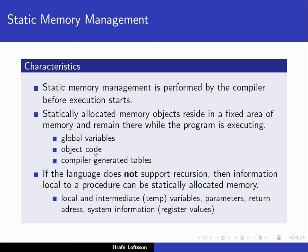Another example of a statically allocated memory object is the object code of the program itself — when loaded into memory, it sits in a specific fixed area and stays there until execution ends, with no dynamic allocation. Another example is compiler-generated tables that may be needed at runtime. Importantly, if the language does not support recursion, then information local to a procedure can also be statically allocated.